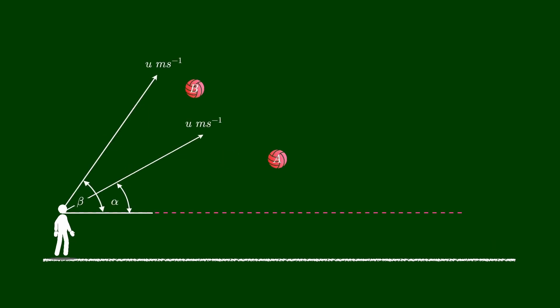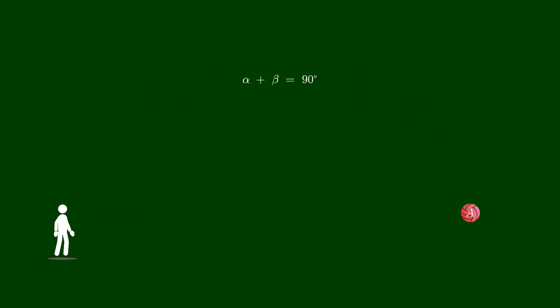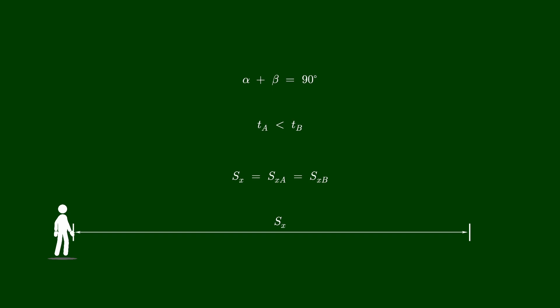Consider the trajectory of two balls thrown at the same velocity but at different angles. These two are complementary angles — in other words, these two angles add together to produce a right angle. We can see that ball B remains in the air for a longer period of time than ball A. However, the horizontal range of both balls is the same. This is true only when the sum of the two angles forms a right angle. Let us derive an equation and confirm this finding.